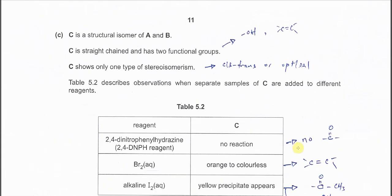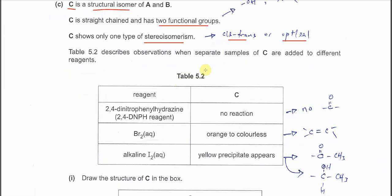Okay, so for Part C. C is a structural isomer of A and B. Again, another structural isomer. C is a straight chain, has two functional groups. And C only shows one type of stereoisomerism. Stereoisomerism, we have two types. So one is cis-trans, another one is optical.